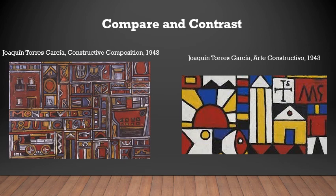The symbols in both of the paintings are also different. The symbols in Constructive Composition — Garcia uses words, letters, and features of houses to show his symbols, whereas in Arte Constructivo, Garcia used more abstract features, but he still added a house, fish, and a cross to represent and signify his meaning.